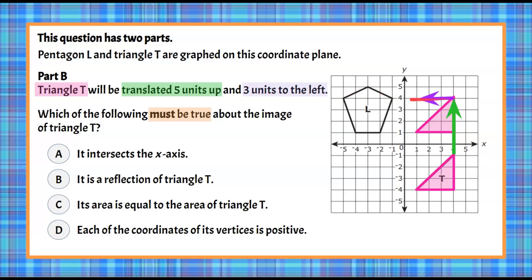Then it says it goes three units to the left. So we're going to take every vertex and move it three units to the left — one, two, three — for the top vertex of image T prime. Then from the next vertex, one, two, three — there's our right angle. And from the last vertex, one, two, three. You can see that a translation still produces an image that is the same size and shape as it should be.